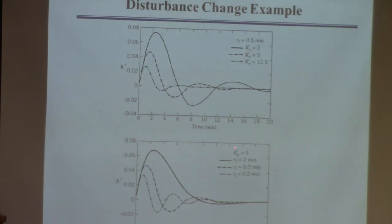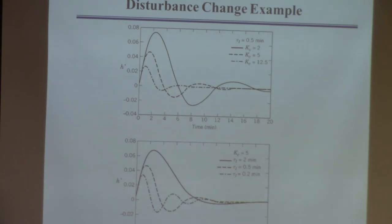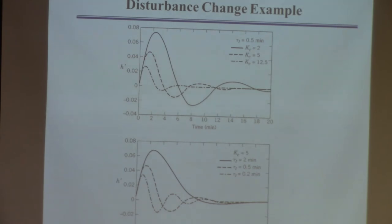Starting next week I'll show you how to actually find these tuning parameter values. In lab you have the heat exchanger, distillation, and pH system experiments — they all have PI or PID controllers that you have to tune. In the spring semester in ChE 402, you'll have at least one experiment where you go through the controller tuning procedure.